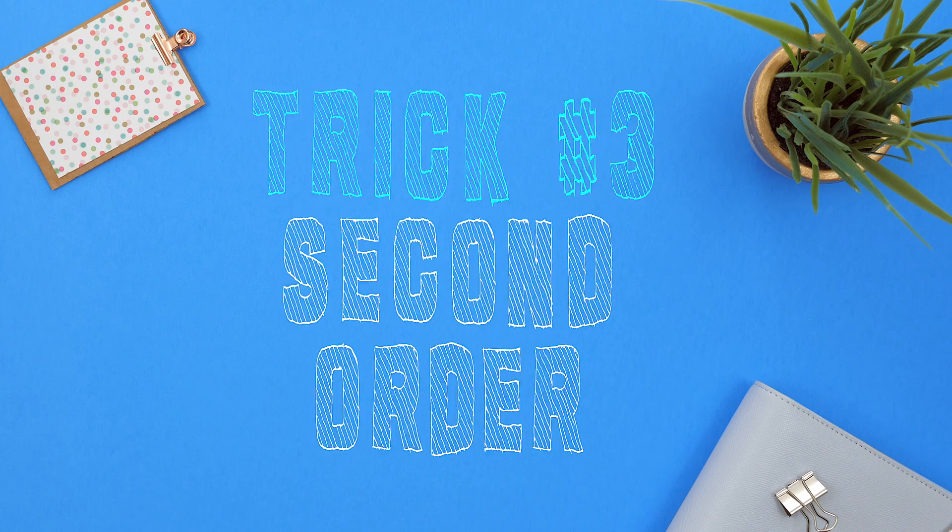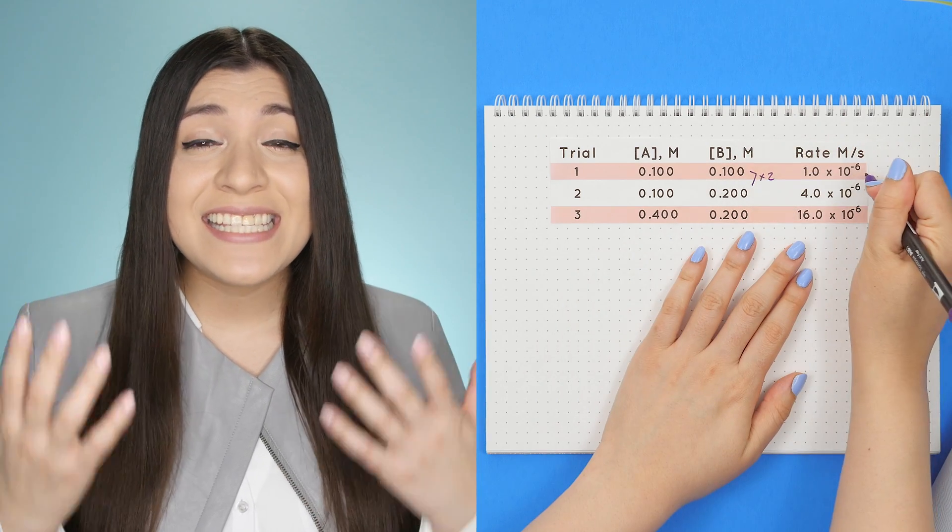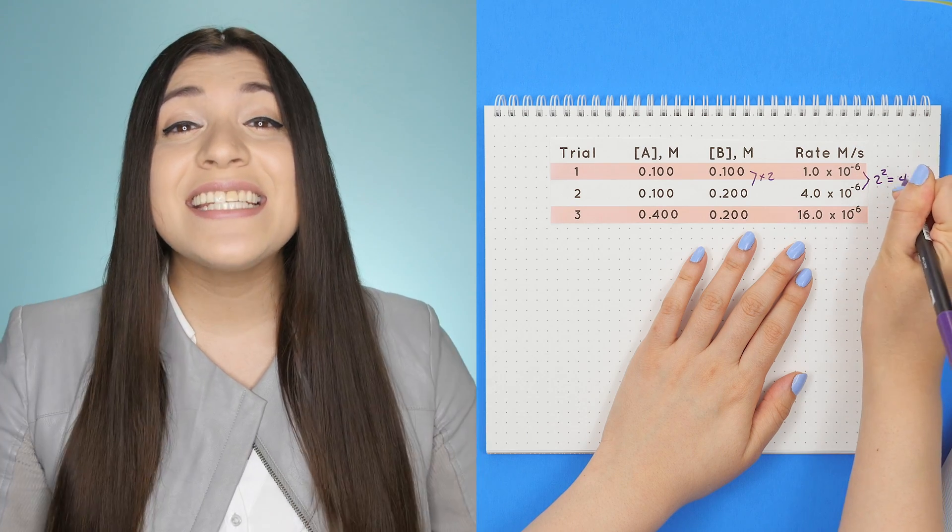Trick three, second order. If whatever you multiplied by your reactant's concentration is the same number but squared to your rate, then it's second order.